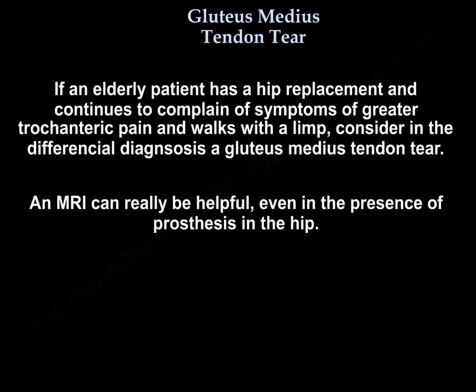If an elderly patient has a hip replacement and continues to complain of greater trochanteric pain and walks with a limp, consider gluteus medius tendon tear in the differential diagnosis. An MRI can be helpful even in the presence of a prosthesis in the hip.